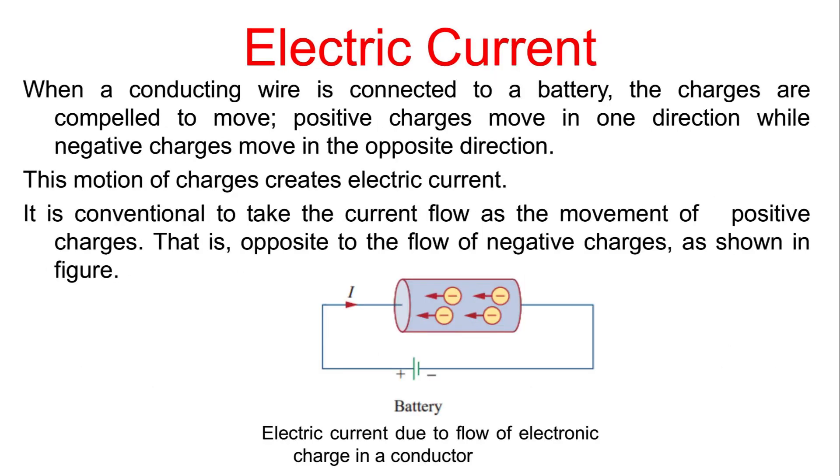Electric current: When a conducting wire is connected to a battery, the charges are compelled to move. Positive charges move in one direction while negative charges move in the opposite direction. This motion of charges creates electric current.